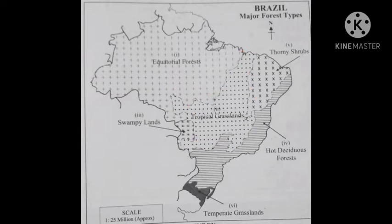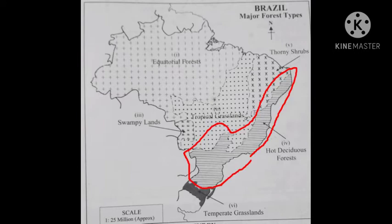The next question is swampy lands. Swampy lands — the tropical grassland is on its side. Next question: hot deciduous forest — the coastal area. The coastal area is on the side.